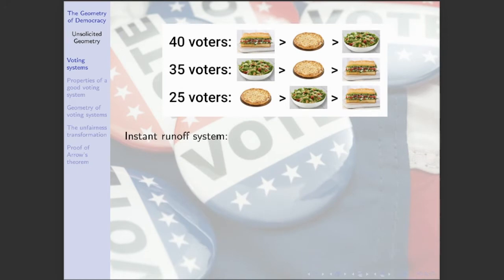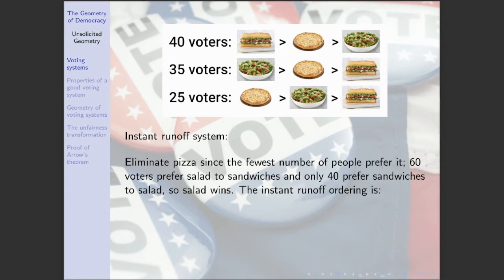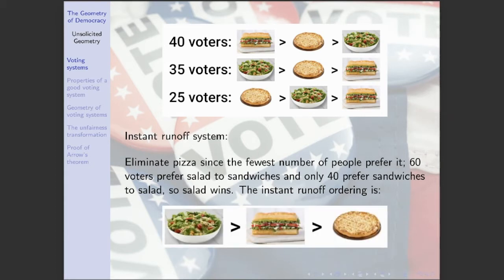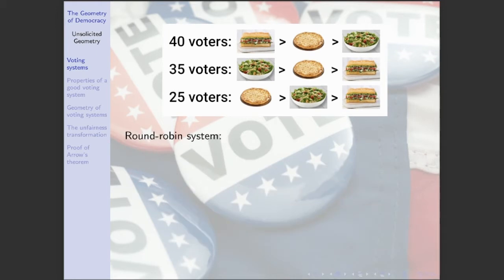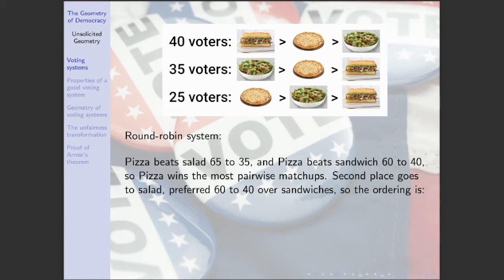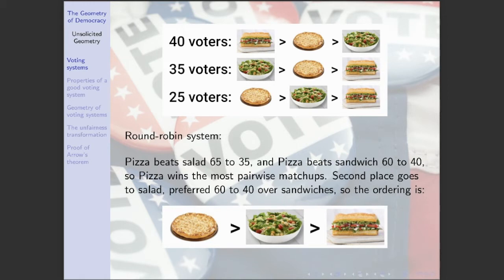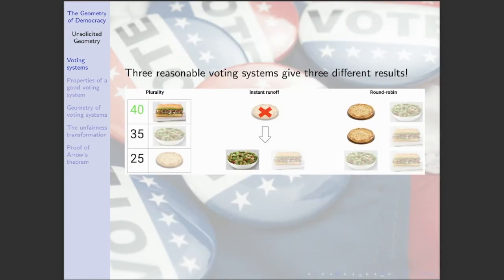In the instant runoff system, we start by eliminating the least popular choice. Only 25 people voted for pizza as their first choice, so we eliminate pizza entirely. We're left with salad and sandwich, and salad is preferred to sandwich by more people than prefer sandwich to salad. So salad wins, giving a runoff ordering of salad, sandwich, and pizza. In the round robin system, we compare each pair of options. Pizza beats both salad and sandwich, so pizza is the winner, followed by salad and then sandwich.